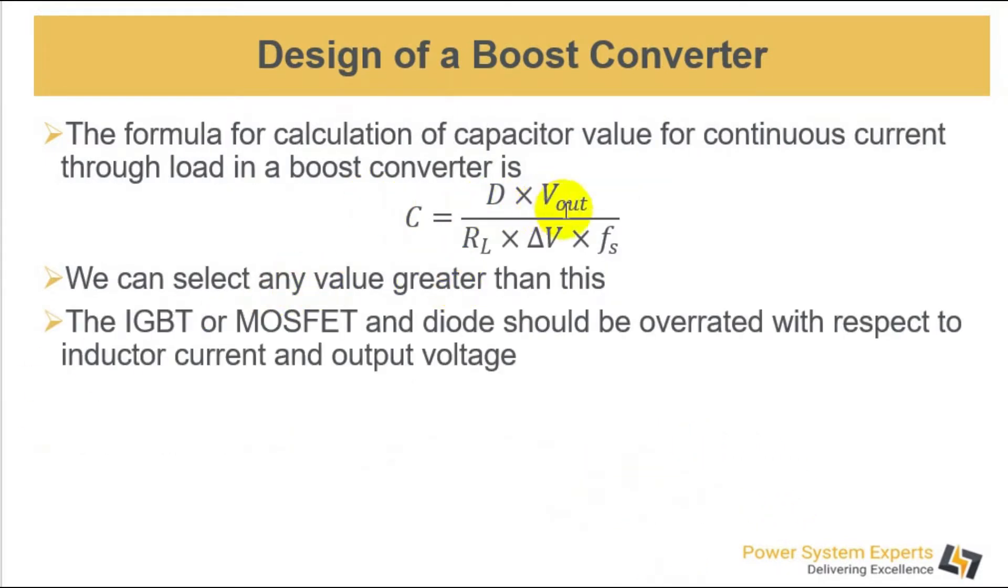The formula for calculation of capacitor is D times V out divided by R times delta V times F. Delta V is the ripple voltage in the output voltage and F is the switching frequency. Any value greater than the value from this formula will work.